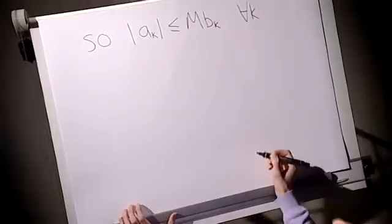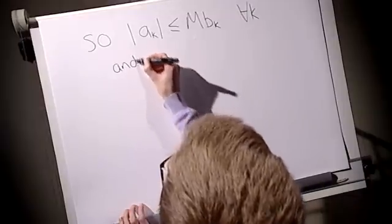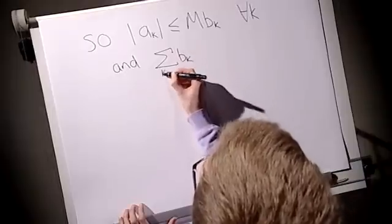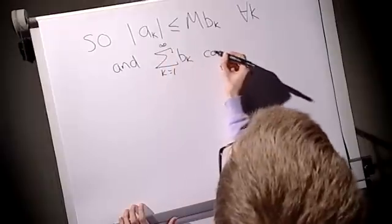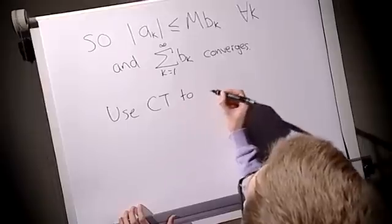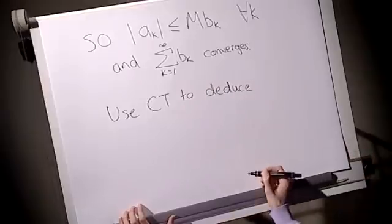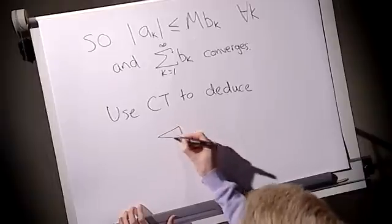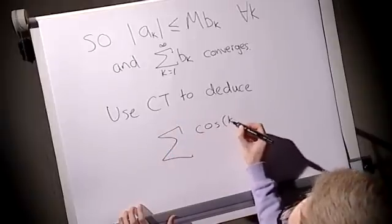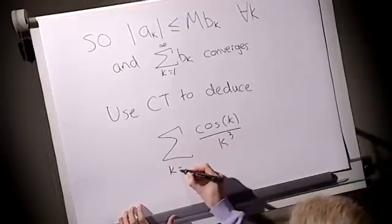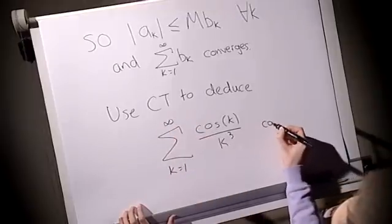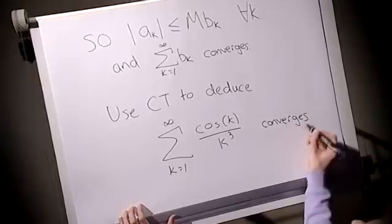So what we've seen is these ak's in modulus are less than or equal to mbk for all k, where we chose m and bk. And importantly, the sum of the bk's from k is 1 to infinity converged. So we're able to use a comparison test to deduce that our series ak converged. The sum of cos k over k cubed from k equals 1 to infinity converges. It's worth noting here that we haven't actually found the limit. We've purely just shown that it converges by comparing it to something else that converges.